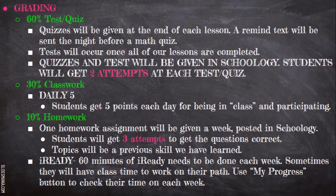Tests will occur once all of the lessons are completed. Quizzes and tests will be given in Schoology. Students will get two attempts at each test or quiz. One attempt will be taken in class and one attempt can be taken at home to fix the answers they got incorrect — just like if they were at school, I would give them the ability to make corrections on their test. That needs to happen within two days. After the test or quiz is given, they have two days to fix it. After that, the window will be closed and whatever grade they received on the first attempt will be the grade they get. Classwork is worth 30% of their grade. I have a daily five — students get five points each day for being in virtual class and participating. If their screen is black and they are not participating, they will not get full credit for class.